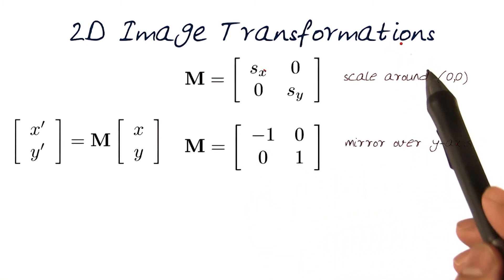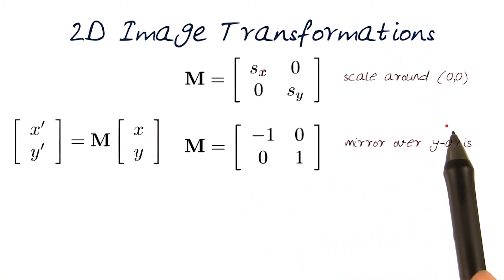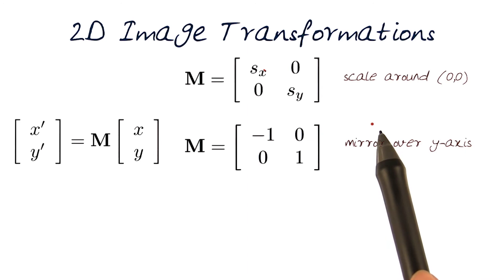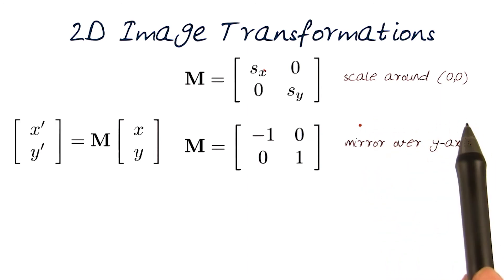When I have the y-axis going this way, it's going to flip all of the values on this side, that is the right side of the image, to the left and all the left ones to the right. So that would be a mirror operation.